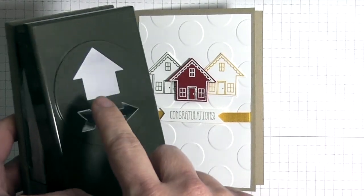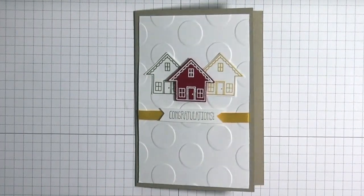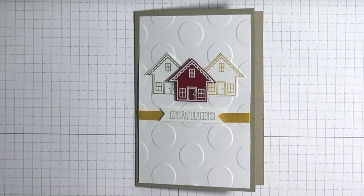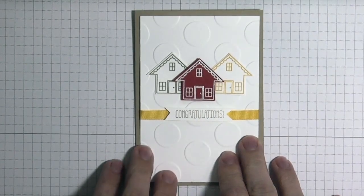It's the What's Up punch, so this arrow right here matches this image. It's real easy to punch out. If you don't have the punch, this is a pretty simple image to cut out by hand.